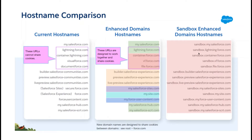After changing, it will be sandbox.lightning.force.com for sandbox. For my.salesforce.com, it will be sandbox.my.salesforce.com. These are the enhanced domain host names. You can see that 'sandbox' is added to identify whether it's a sandbox or not.